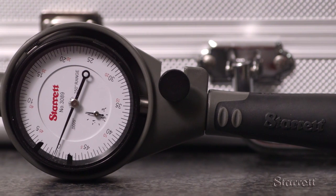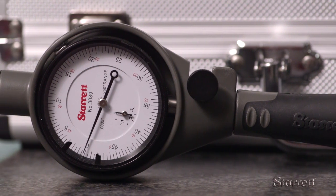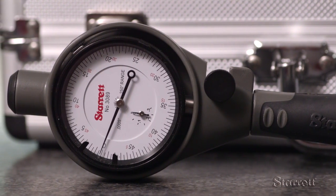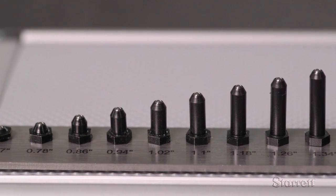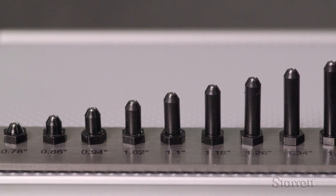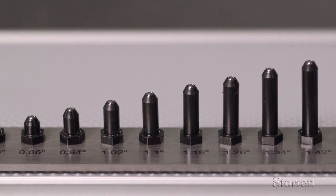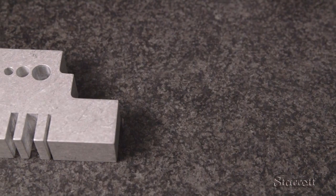It can measure holes between 0.7 to 1.5 inches with a resolution to 0.5 a thousandth. The gauge uses a combination of interchangeable anvils and spacers along with a precise dial indicator. Let's see how this works.